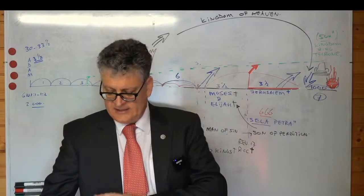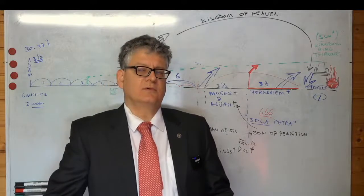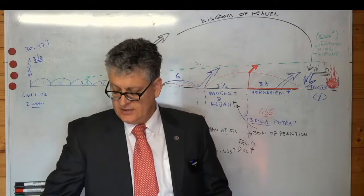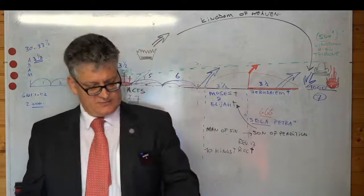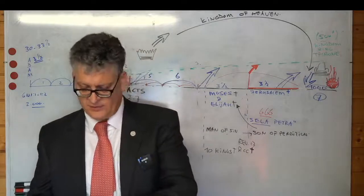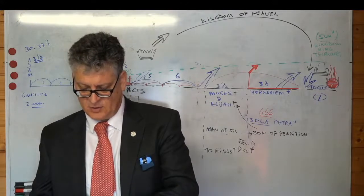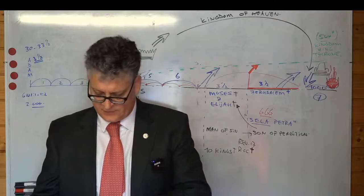We want to talk about why this is not a reference to Enoch as one of the two witnesses. First of all, we read in Deuteronomy chapter 34, verse 5 and verse 6, that Moses did not stay dead.